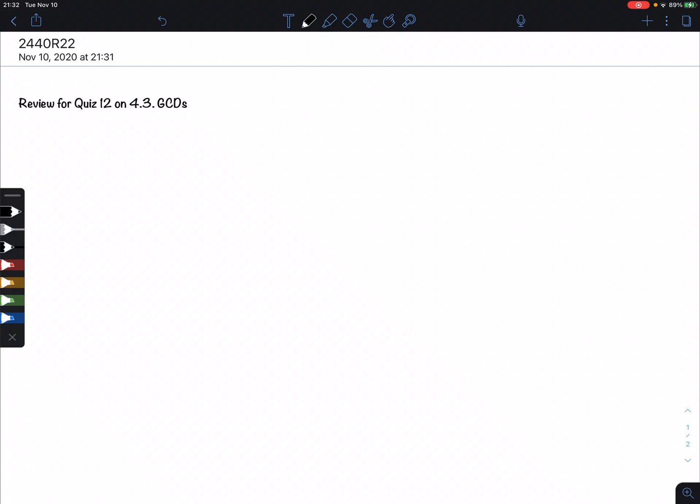Greetings all. I want to do a quiz on GCDs using Euclid's algorithm, also called the Euclidean algorithm. We want two things: to find the GCD, but also to write the GCD as a linear combination of the originals, the Bézout form. I want you to do both and this algorithm takes care of the whole thing.